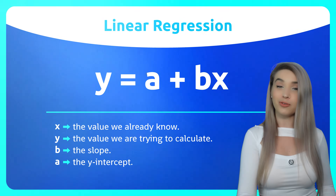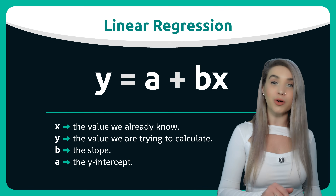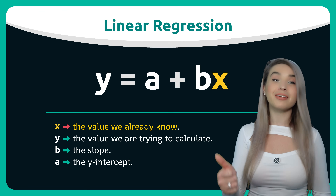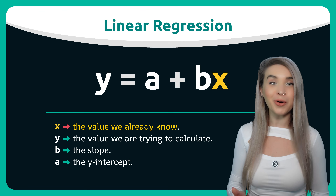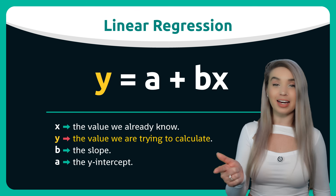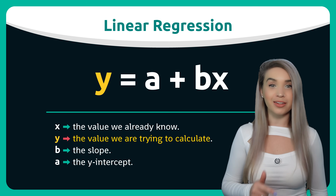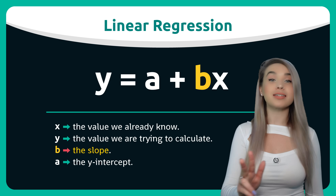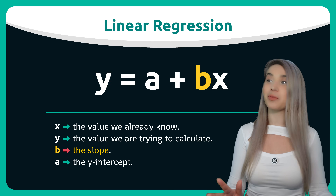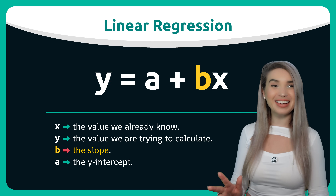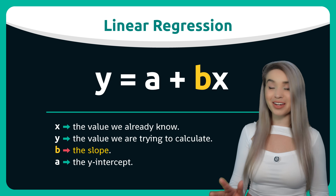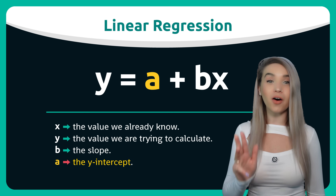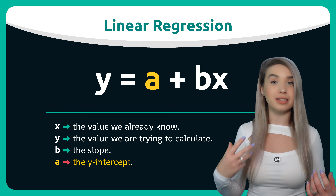Now the formula has four components: x, the value we already know; y, the value we are trying to predict; b, or the slope, which I will explain shortly; and lastly we have the y-intercept, also known as a.